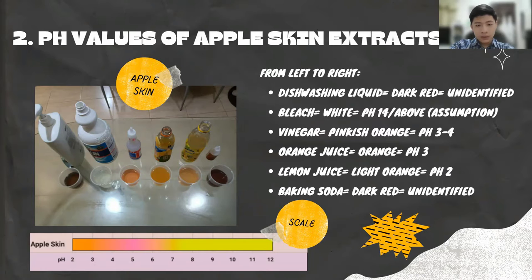For the bleach, it turned white. Although white isn't on the scale, I can assume that as we go to the right of the scale it will turn to lighter colors. So I'm assuming this gives bleach a pH value of 14 or more — it's a very strong alkaline.